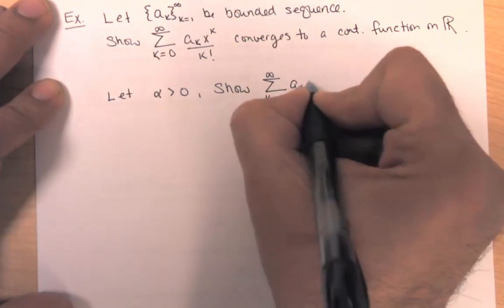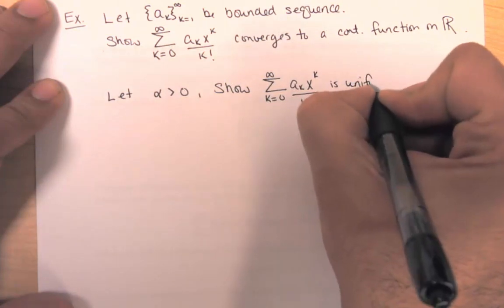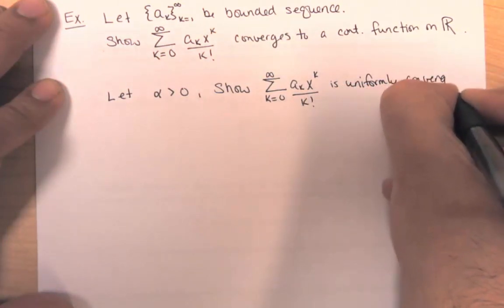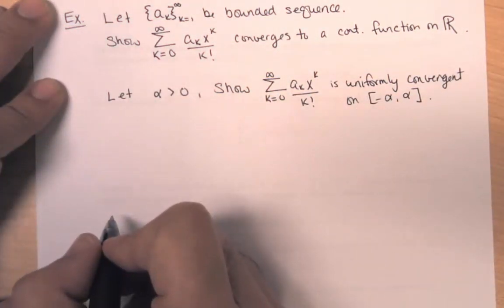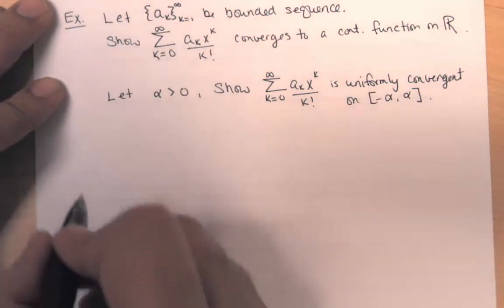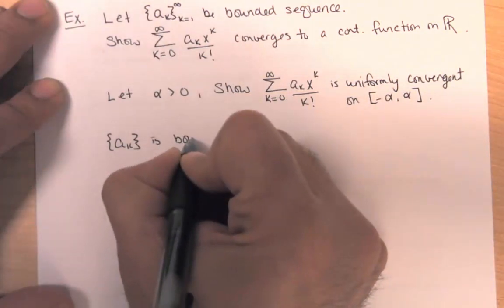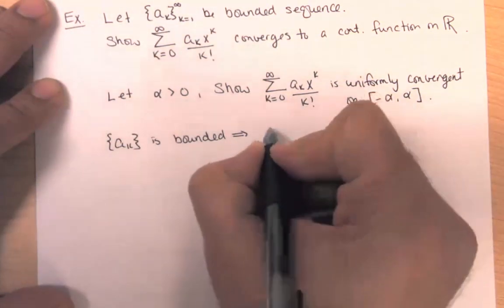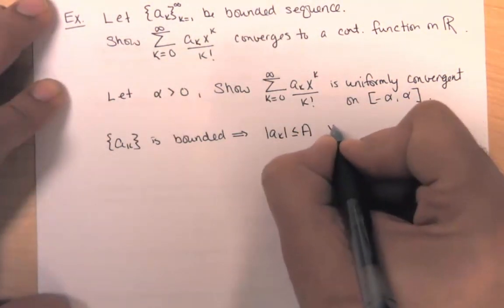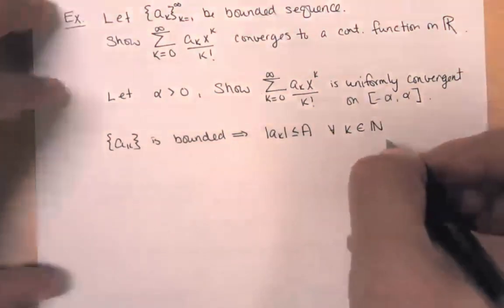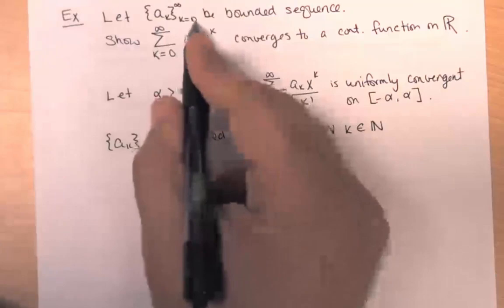We're going to first show that my series is uniformly convergent on the closed interval [−α, α] for some positive α. The fact that the sequence {a_k} is bounded implies that |a_k| ≤ A for some number A, for every natural number k.